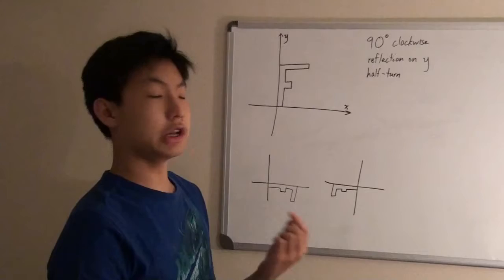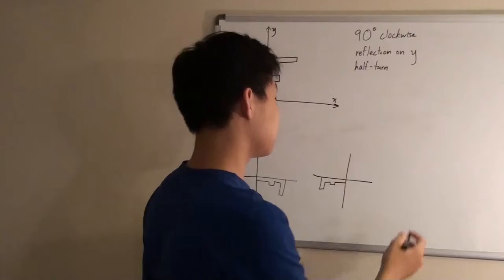And then finally we do another half turn, which is basically a 180 degree turn. So you just flip it half of a 360 degrees.